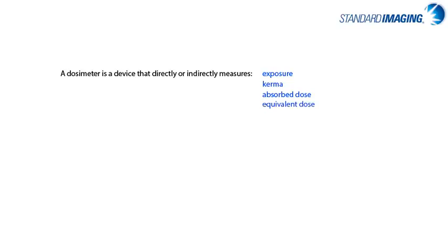A dosimeter can be described as any device capable of measuring quantities related to ionizing radiation — in particular, exposure, KERMA, absorbed dose, or equivalent dose. A dosimeter, along with its reader such as an electrometer, is referred to as a dosimetry system.